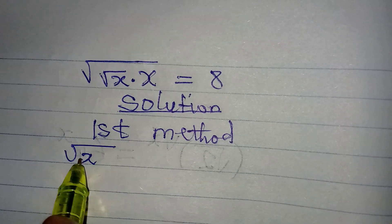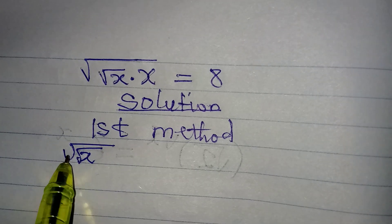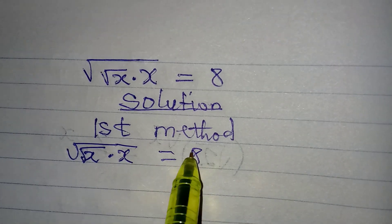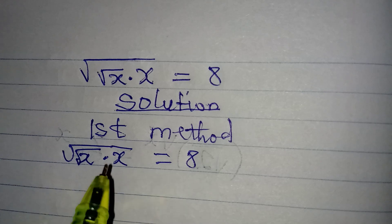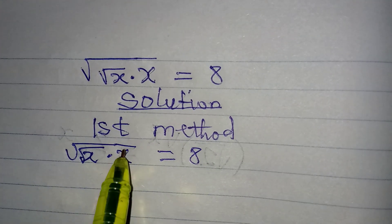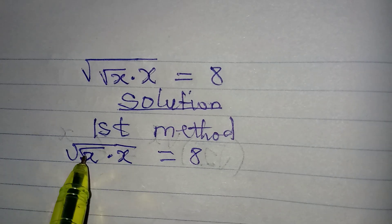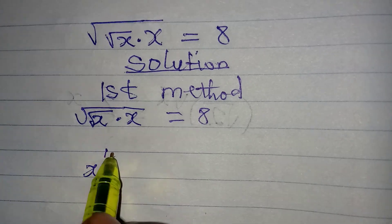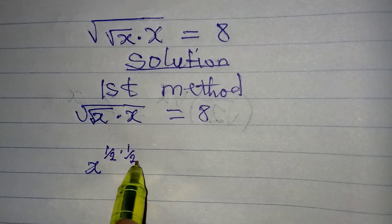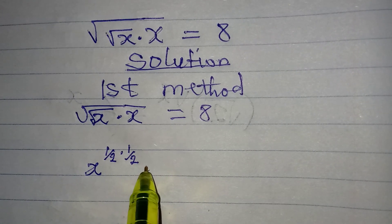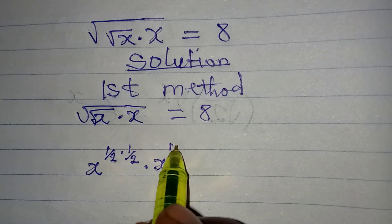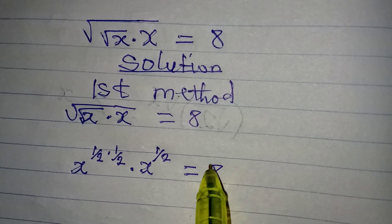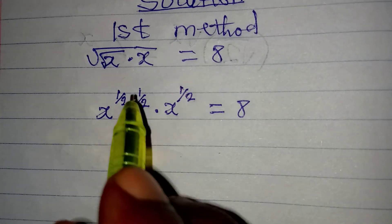We have the square root of square root of x, multiplied by x, and this is equal to 8. Please take note: the second x is under one square root sign, while the first x is under two square root signs. So we have x to the power of one over two, multiplied by one over two, and the second x has the power of one over two. This is equal to 8.